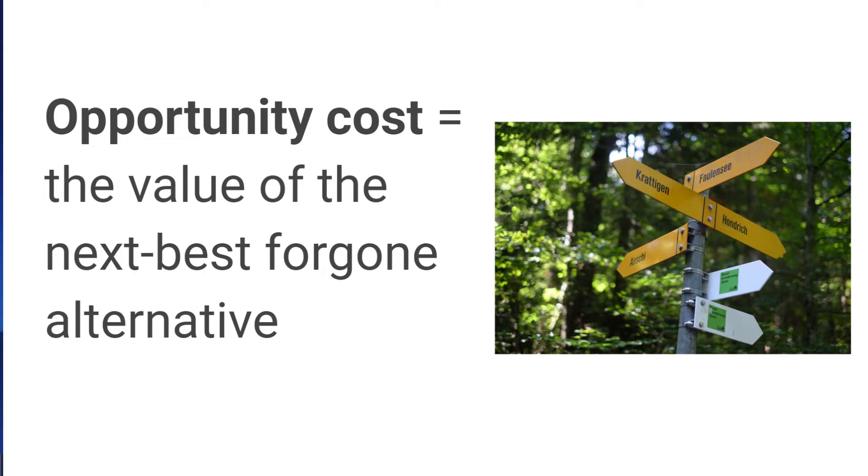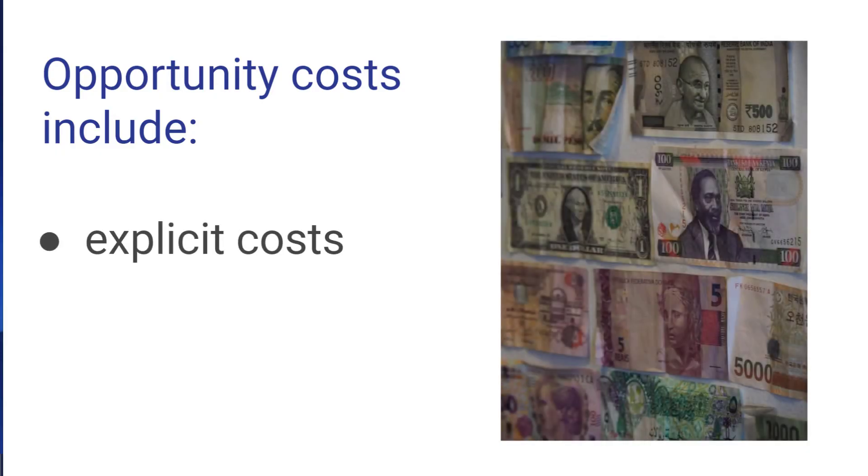The opportunity cost of anything that we do is what we give up in order to do that. These opportunity costs consist of two broad categories. One is the explicit cost, which refers to the actual payment you make for items. So an explicit cost involves an actual payment. For example, if you go out to dinner, the explicit cost would be the cost of transportation getting there, the cost of the meal, the tip for the service, and so on.